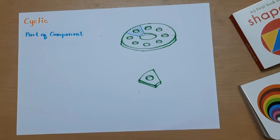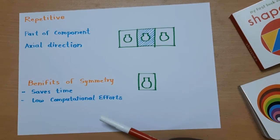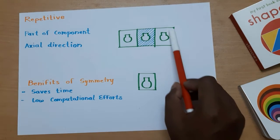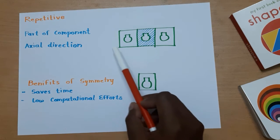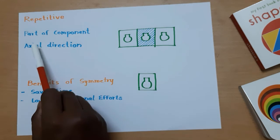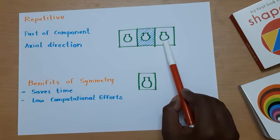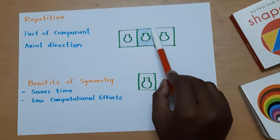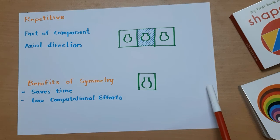The last type is repetitive symmetry. Here the component repeats in one direction — it is not about an axis or a plane, but directional, just like the bogies of a railway train. We consider only one component, analyze it, and then make the result symmetric in that direction across each component. This gives us the result of the full model.